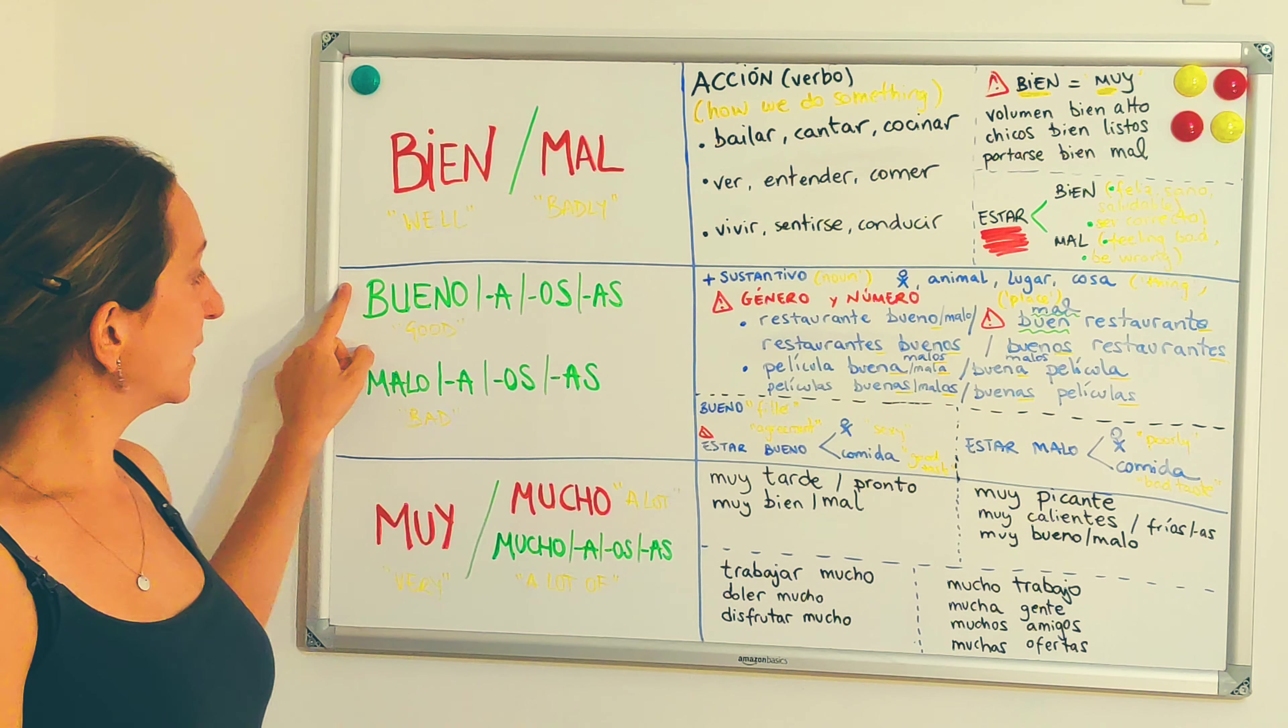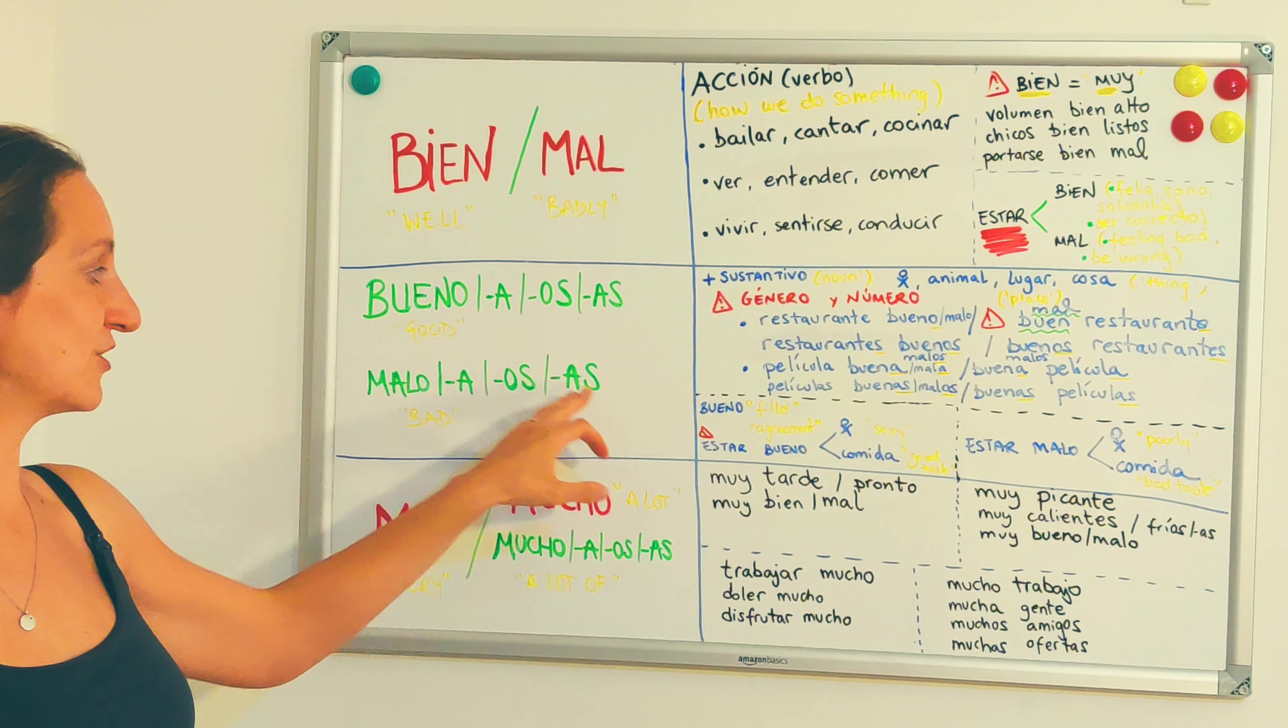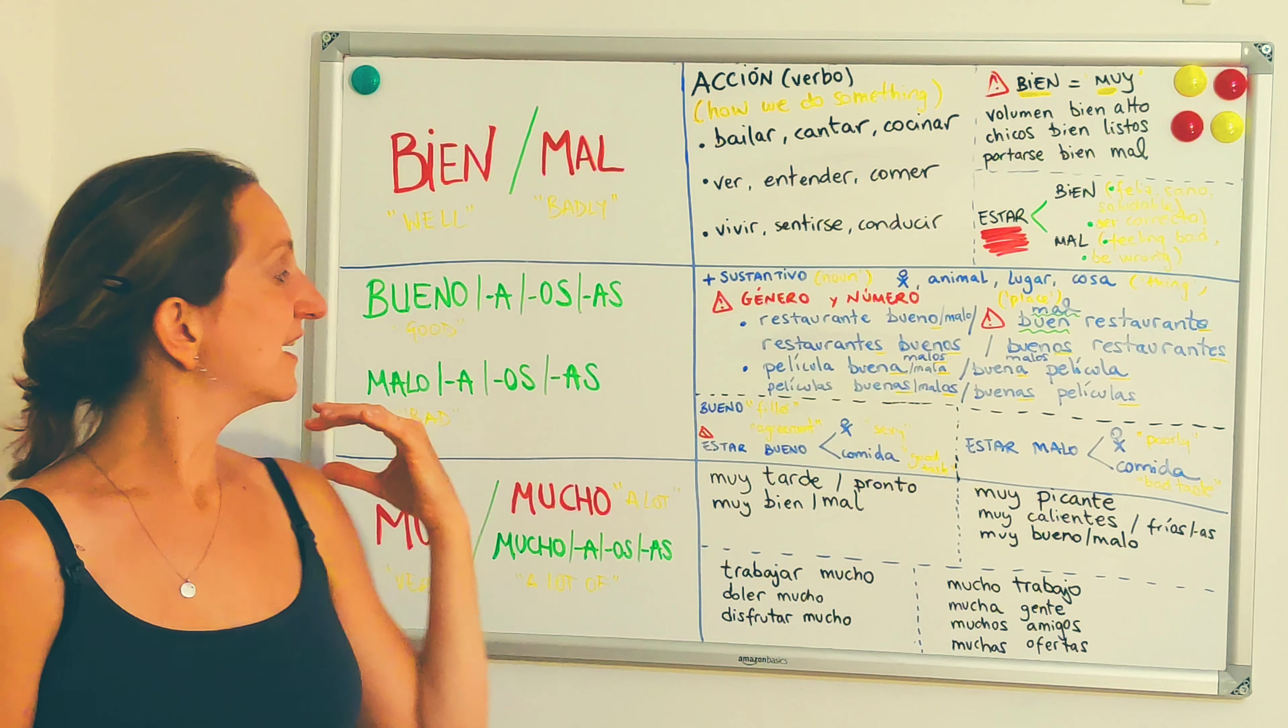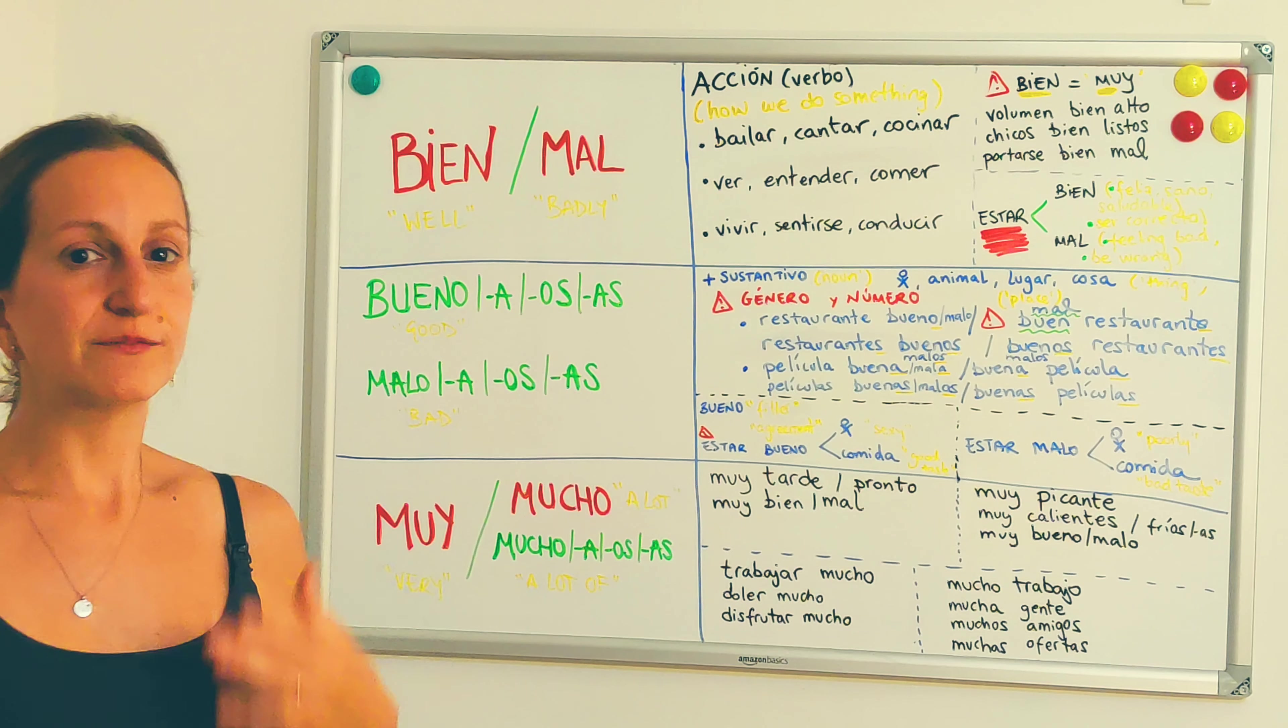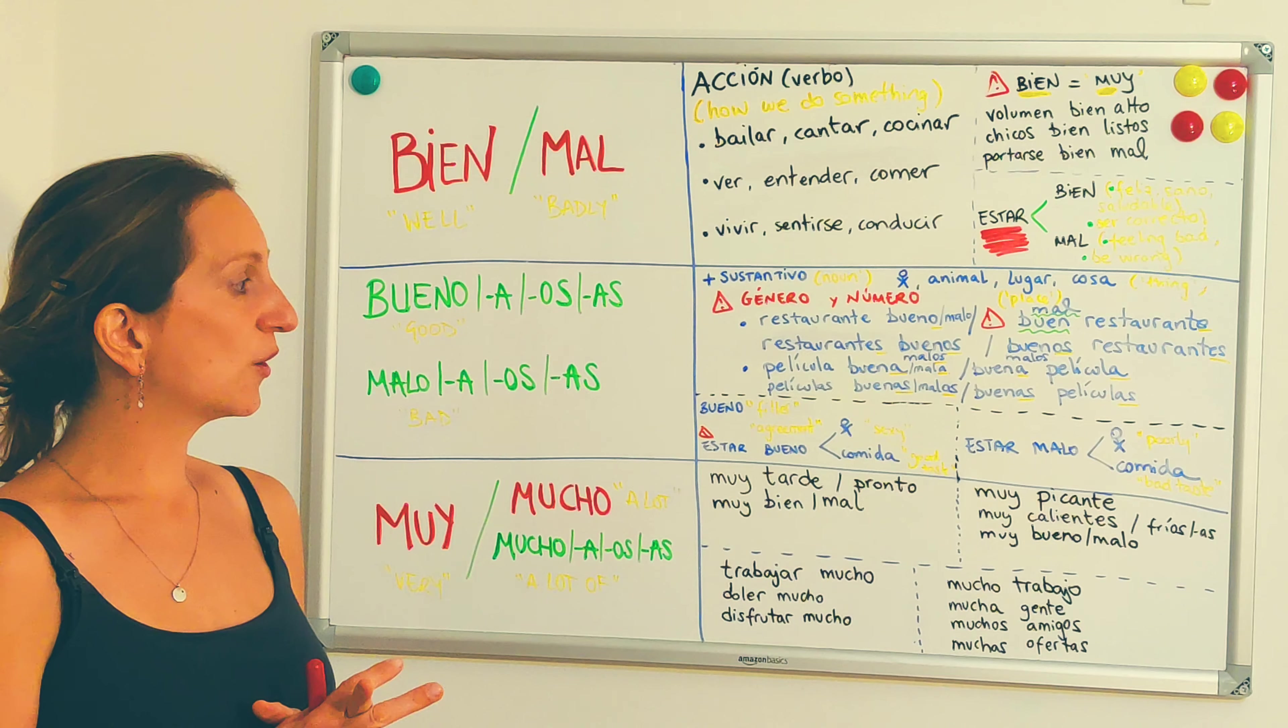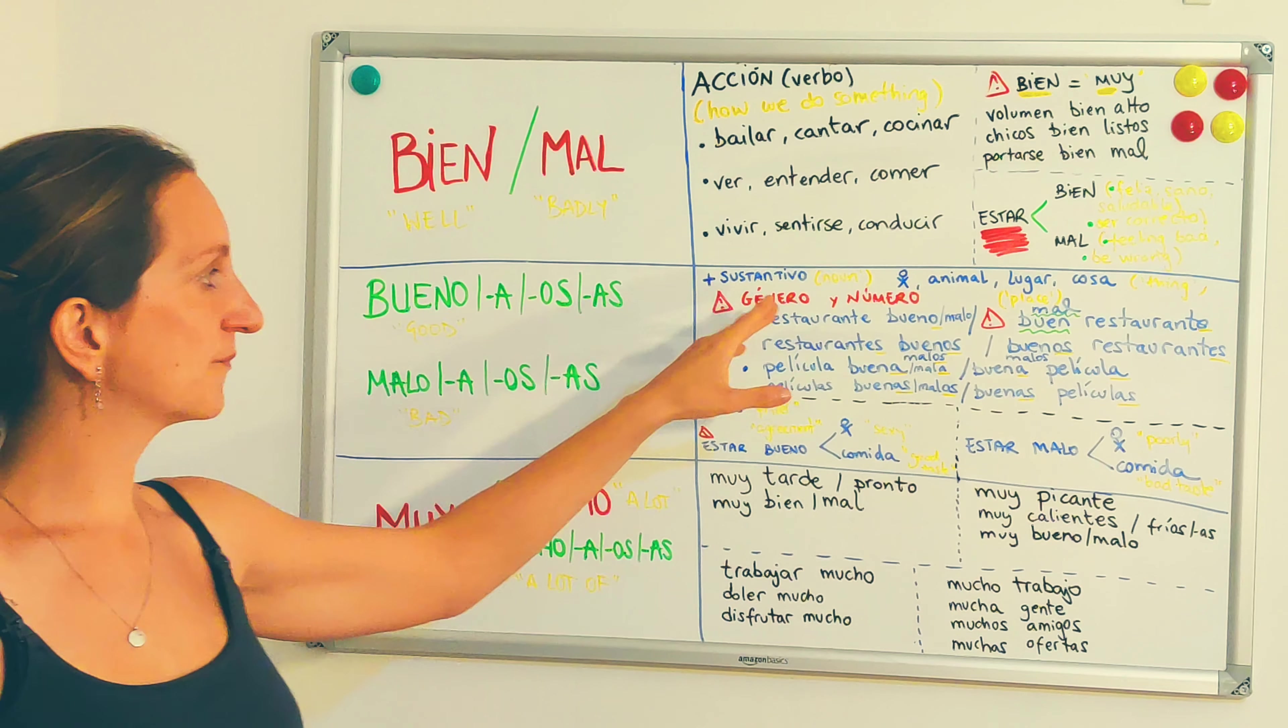Then we've got bueno, buena, buenos, buenas. Malo, mala, malos, malas. In this case, these are adjectives. They behave as adjectives. So they will go mainly with nouns, sustantivos, nouns.